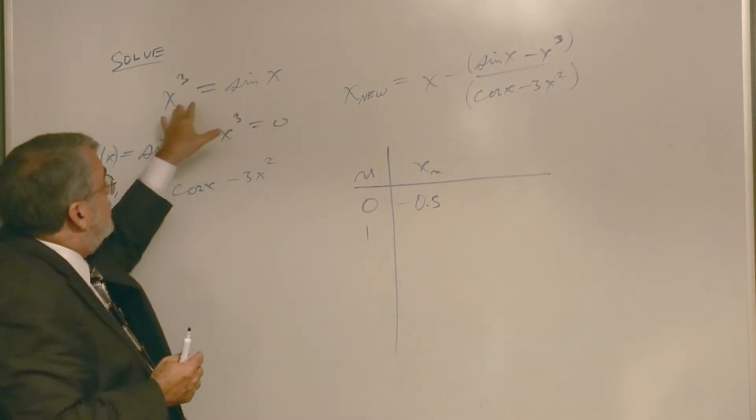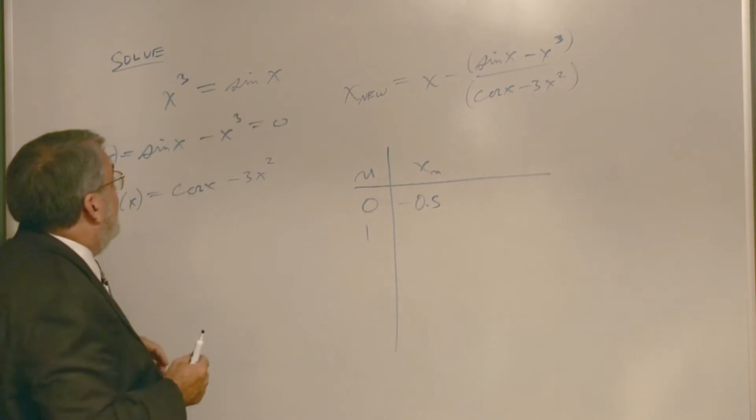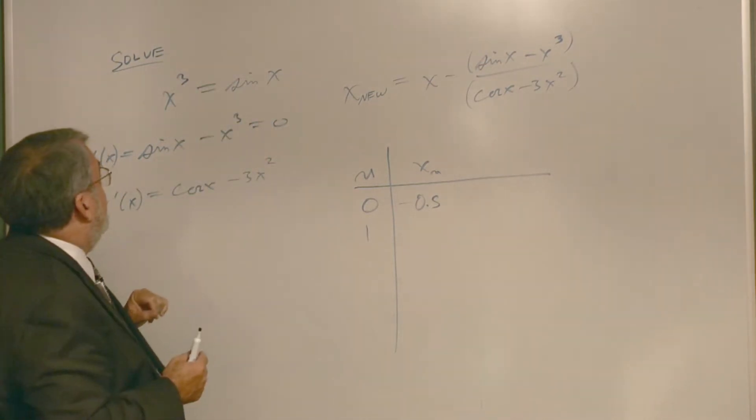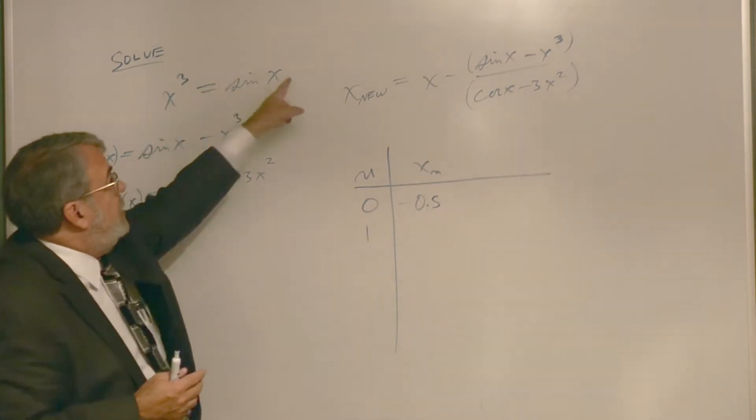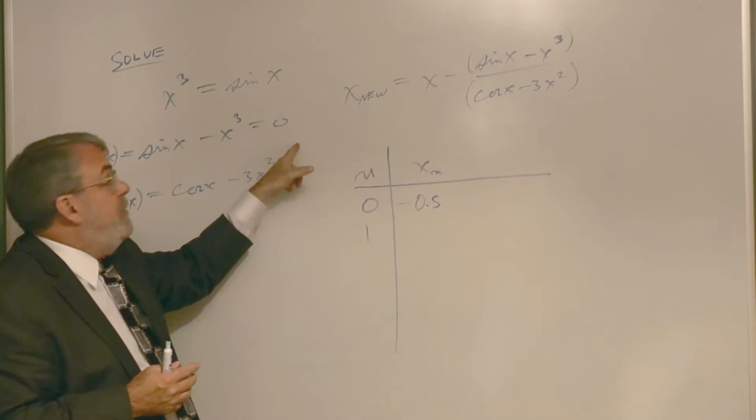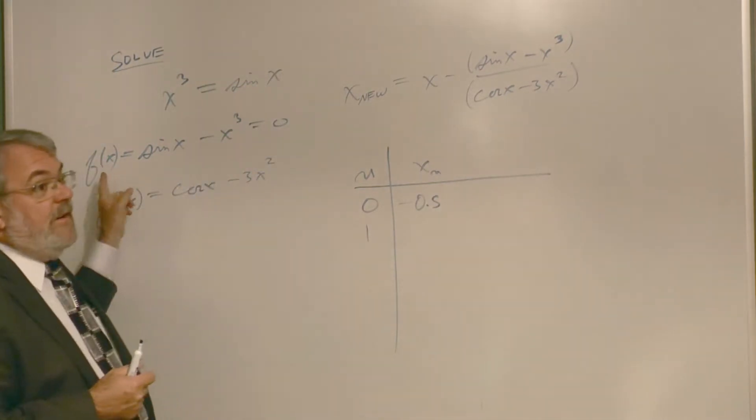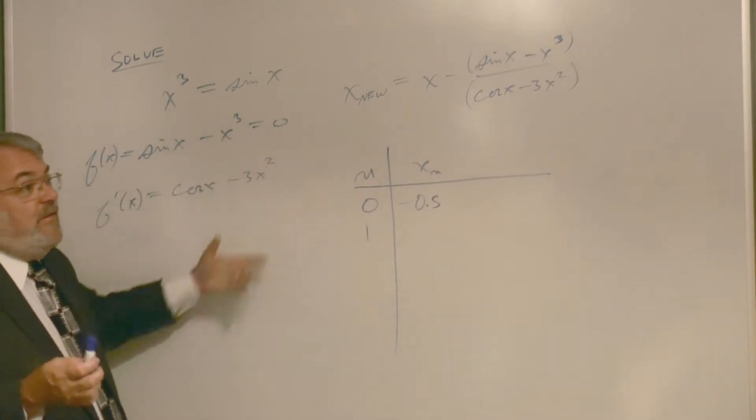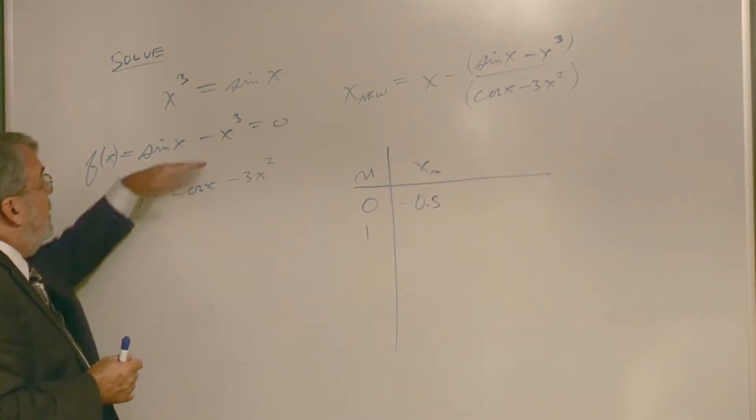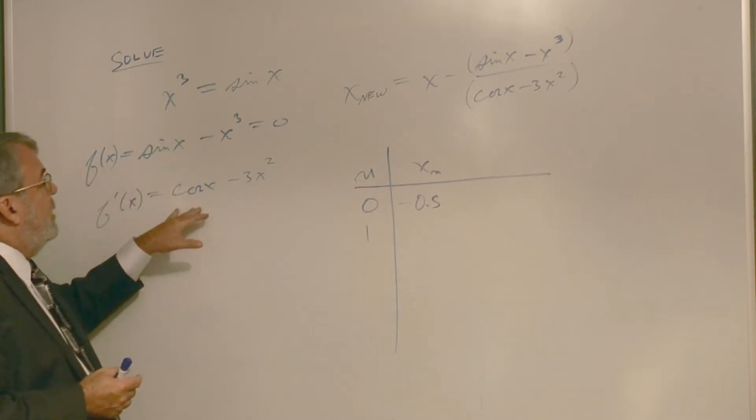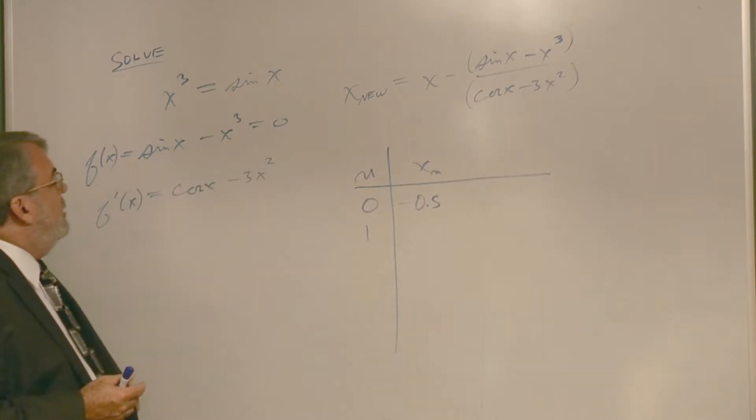Now in order to solve this by Newton's method, I first have to bring everything to one side instead of equal to zero. So I decided to subtract x cubed as sin x minus x cubed would equal to zero. I call that f of x. We have to create a function which equals zero and solve for that function to get the roots. In the course of Newton's method, we've got to take the derivative. So derivative of the sine is cosine and then minus 3x squared.